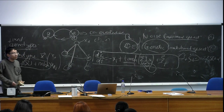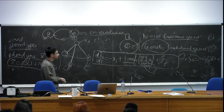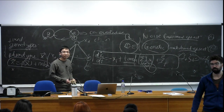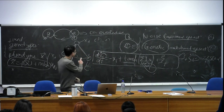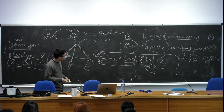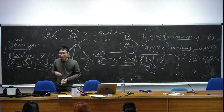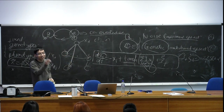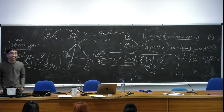Q&A: A question arises about notation — whether the dot notation means the negative of position or velocity. Clarification: xi here is the state (not velocity). The dot notation denotes the time derivative of xi. Sometimes the notation is mixed between dx/dt and dot notation, which can cause confusion.